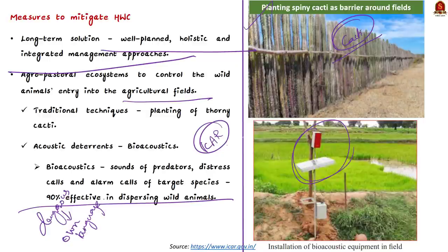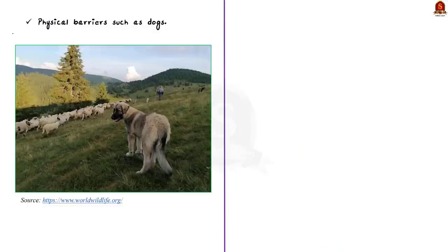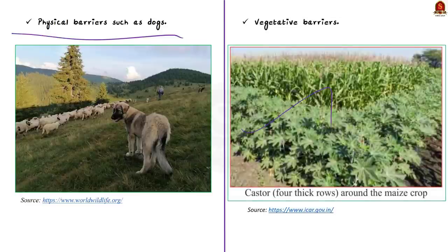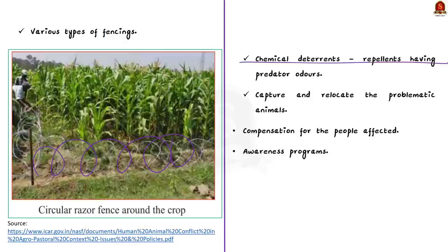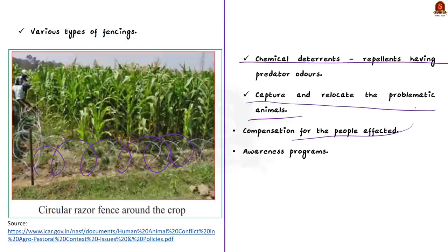A bioacoustics video is played as an example. Apart from this, physical barriers such as dogs can be used, as well as vegetative barriers such as high-density planting of castor around maize and sorghum. Various types of fencing can also be used, such as erecting circular razor wire around crops. Chemical deterrents such as repellents with predator odors can be used, or problematic animals can be captured and relocated. Solutions also include compensation for people affected by wildlife — many state governments already provide this — and awareness programs to educate people.